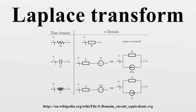The Laplace-Stieltjes transform of a function g: ℝ → ℝ is defined by the Lebesgue-Stieltjes integral, where g is assumed to be of bounded variation. If g is the antiderivative of f, then the Laplace-Stieltjes transform of g and the Laplace transform of f coincide. In general, the Laplace-Stieltjes transform is the Laplace transform of the Stieltjes measure associated to g. So in practice, the only distinction between the two transforms is that the Laplace transform operates on the density function of the measure, whereas the Laplace-Stieltjes transform operates on its cumulative distribution function.